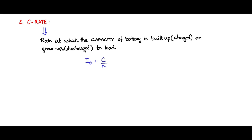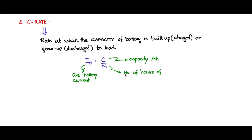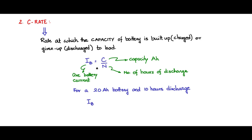We have a simple equation here: IB, the battery average current, is equal to C divided by N. C is the ampere-hour capacity and N is the number of hours of continuous discharge. For example, for a 20 ampere-hour battery and 10 hours of discharge, IB is 20 ampere-hours divided by 10 hours, which is 2 amps.